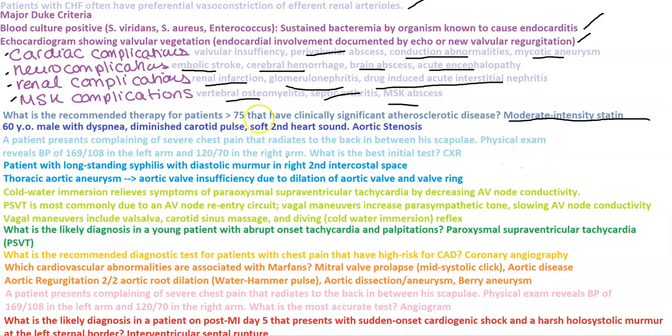A 60-year-old male with dyspnea, diminished carotid pulse, and soft second heart sound — that would be aortic stenosis. High yield: diminished carotid pulse and soft second heart sound equals aortic stenosis.